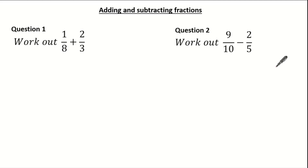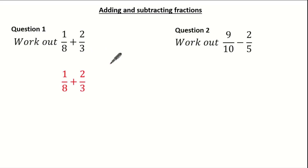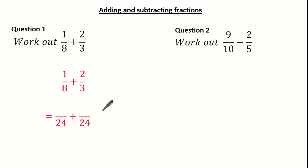Let's look at another way, but to quicken it up without using pictures. We're asked to work out 1 eighth and add it to 2 thirds. First things first, we can see we have different denominators, so let's identify our lowest common multiple. The lowest common multiple of 8 and 3 is 24, so I know I need to make our denominators 24.